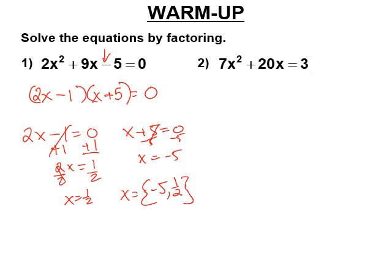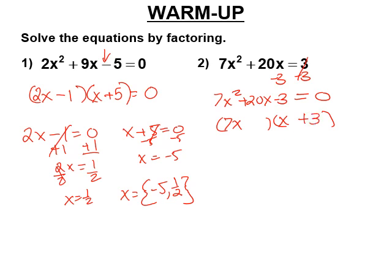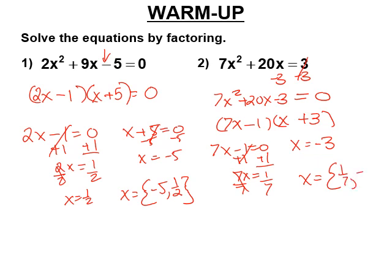This one does not equal zero, so we have to subtract 3 from both sides. Now it'll equal zero: 7x squared plus 20x minus 3. We're going to factor that. It has to start with 7x and x. That's going to be a plus 3 and a minus 1. So x equals negative 3, to make that one equal to zero, and to make 7x minus 1 equal to zero, it's one-seventh. So x is one-seventh or negative 3.